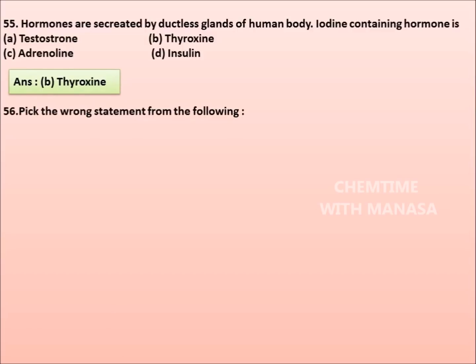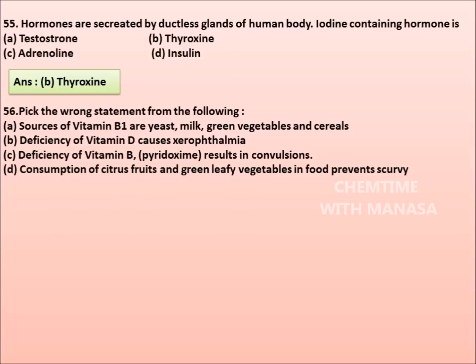56. Pick the wrong statement from the following. Sources of vitamin B1 are yeast, milk, green vegetables and cereals. Deficiency of vitamin D causes xerophthalmia. Deficiency of vitamin B results in convulsions. Consumption of citrus fruits, green leafy vegetables in food prevents scurvy. The correct answer is option B: Deficiency of vitamin D causes xerophthalmia is the wrong statement.